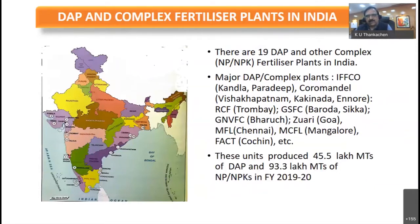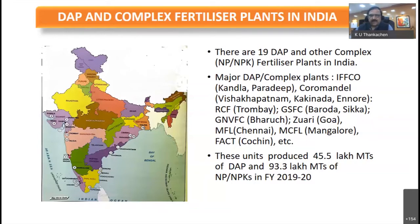There are 19 DAP and complex fertilizer plants including NP and NPK. The major ones include IFFCO at Kandla and Paradip, Coromandel at Visakhapatnam, Kakinada, RCF at Trombay, GSFC at Baroda and Sikka, GNFC at Bharuch, Zuari at Goa, MFL at Chennai, MCFL at Mangalore, and FACT at Kochi. These units produced around 45 lakh metric tons of DAP and 93 lakh metric tons of NPK in the last financial year.